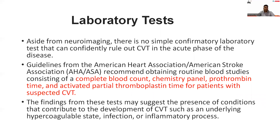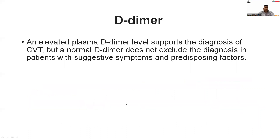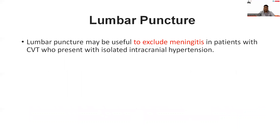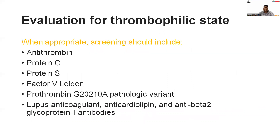Regarding laboratory diagnosis: routine tests required include complete blood count, biochemistry panel, coagulation screen including PT and APTT in patients with suspected CSVT. Findings may suggest underlying hypercoagulable state, infection, or inflammatory process. An elevated plasma D-dimer supports the diagnosis of CSVT, but a normal D-dimer does not exclude the diagnosis in patients with suggestive symptoms or predisposing factors. Lumbar puncture may be useful to exclude meningitis in patients presenting with isolated intracranial hypertension. Evaluation of thrombophilic state should include antithrombin, protein C, protein S, factor V Leiden, prothrombin G20210A pathologic variant, lupus anticoagulant, anti-cardiolipin, and anti-beta-2 glycoprotein-1 antibodies.